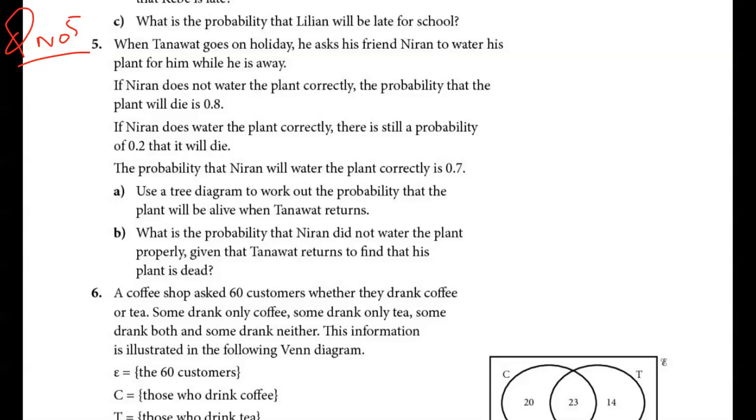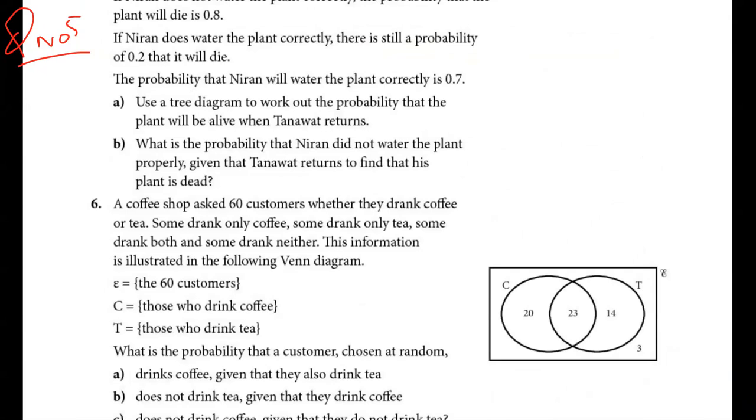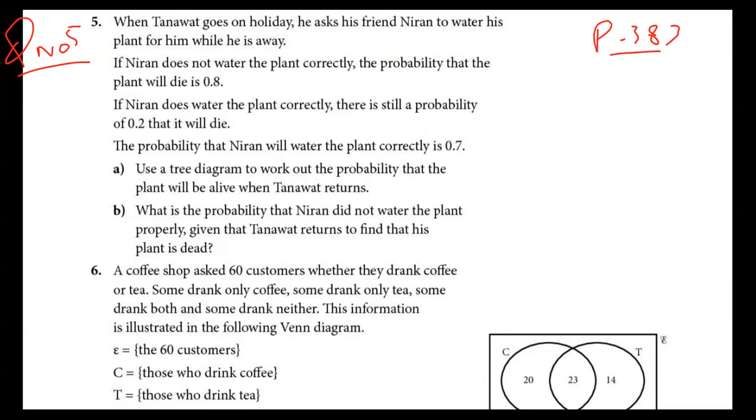This is a new topic, conditional probability, from the textbook page number 383, page 233 in David Rayner's book. Let's start with question number five.